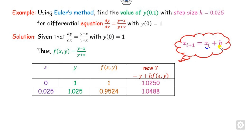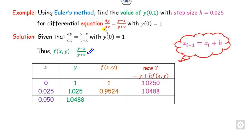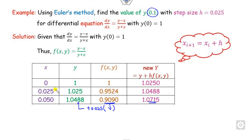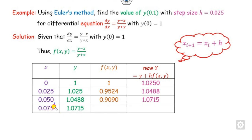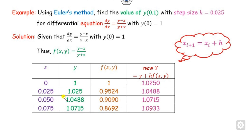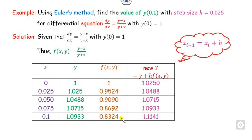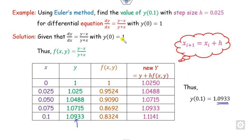Continuing: the next x = previous x + h = 0.050, new y = previous y + 0.025×f. At x = 0.075, take that computed y, substitute into f(x, y), and compute the next y. Since the target is x = 0.1, we check: x = 0.1 is reached, so we stop. The corresponding value of y at x = 0.1 is 1.0933, which is the required answer. This is how you complete the table.